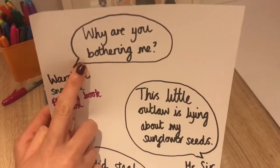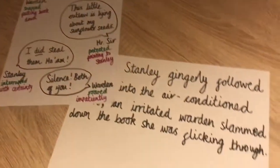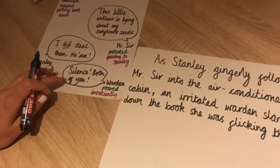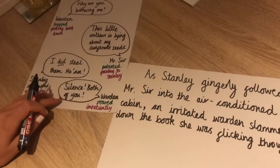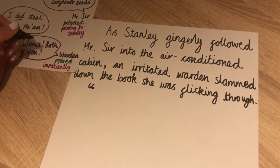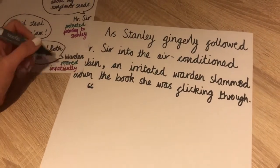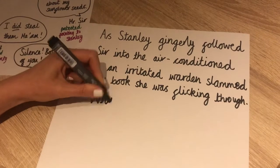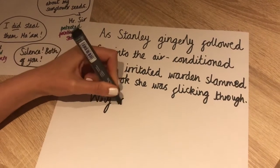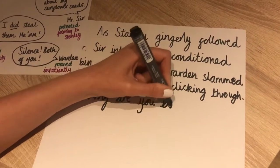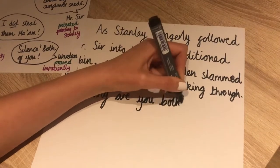Now I'm going to include her piece of dialogue. Remember when we're writing dialogue we need a new paragraph that's indented for each new speaker. So we've got our inverted commas, we've got our capital to start speech. I'm going to say: 'Why are you bothering me?'